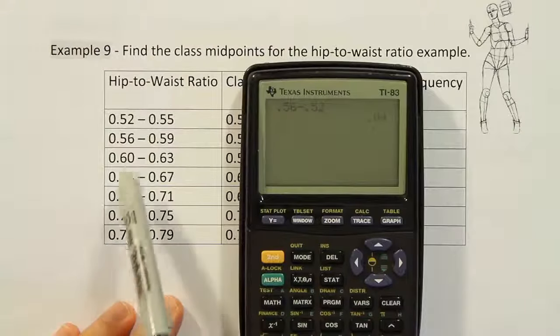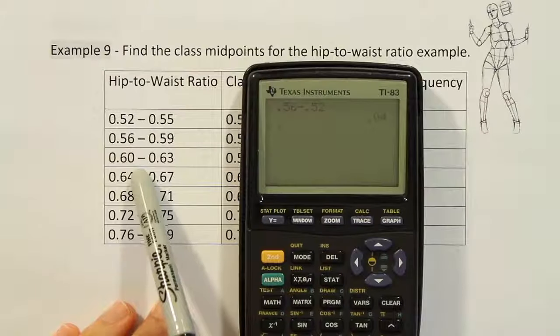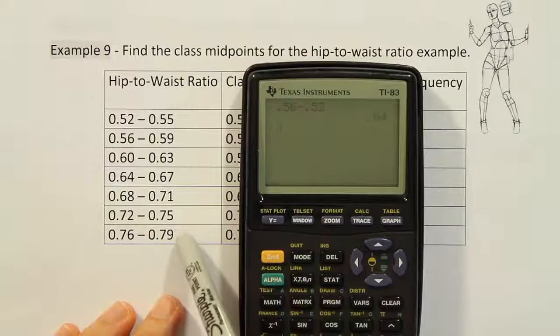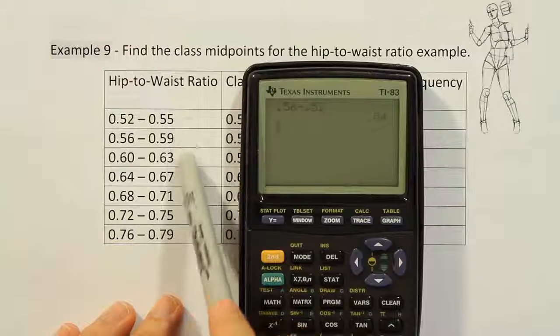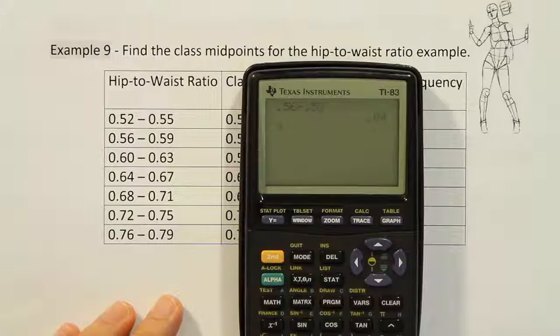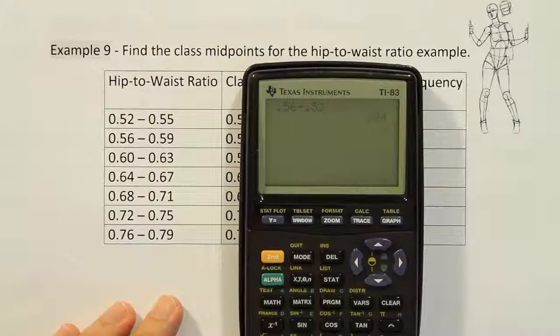And you find that difference here as well between 0.60 and 0.64, you find it here between 0.75 and 0.79. And all the way throughout the table any two consecutive pairs of either lower class limits or upper class limits have that common difference.